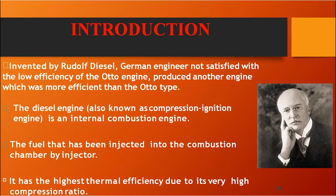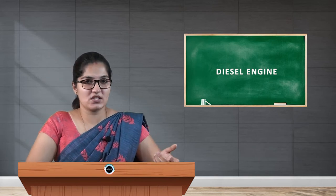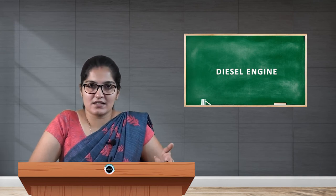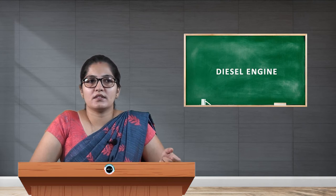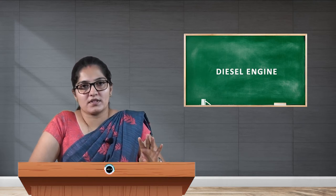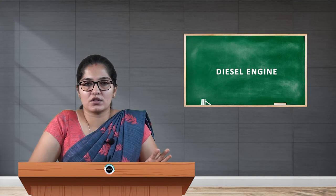The diesel engine works by compression ignition, hence it is also known as a compression ignition engine and is an internal combustion engine. The fuel is injected into the combustion chamber by means of an injector. It has the highest thermal efficiency due to its very high compression ratio. Compared to the petrol engine, the diesel engine has the highest compression ratio, due to which it has high efficiency. Let us study the working of the diesel engine by four processes, that is four strokes. It is a four-stroke diesel engine.